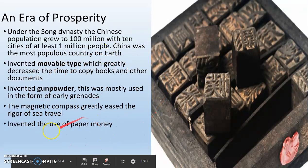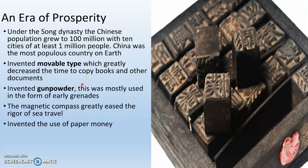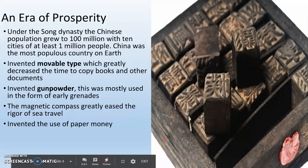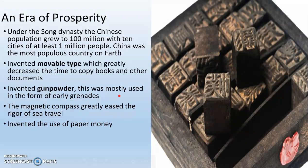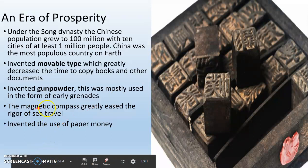They invented two really big, important technologies. The first is movable type — think of this as the first printing press, the first quick way to print papers, texts, and books versus hand copying. This is especially important because most Asian languages don't have letters — you have a different symbol for every word, so movable type made writing much quicker. They also invented gunpowder, mostly used in the form of early grenades. They had some guns, but nothing like you're thinking. They also invented the magnetic compass, which made sea travel very easy.